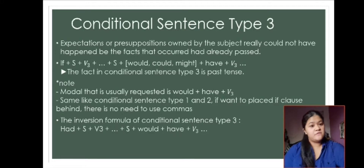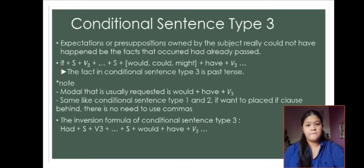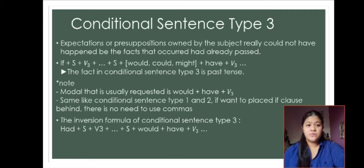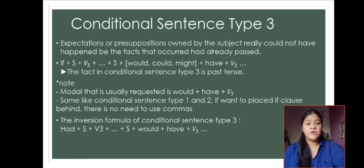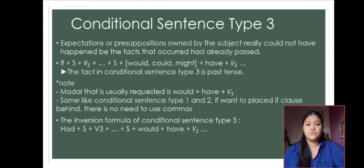I have two notes for type 3. First, the modal usually used is 'would + have + verb 3.' Second, same as type 1 and type 2, if you want to place the if clause behind, there is no need to use a comma. The inversion formula for conditional sentence type 3 is: had + subject + verb 3 + complement + subject + would + have + verb 3.